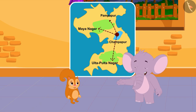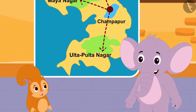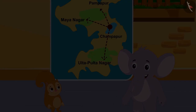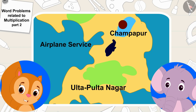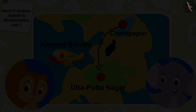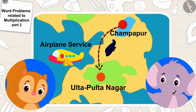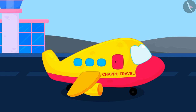We are even running the bus service to more places, Appu said excitedly. Appu, our Chappu Travel Company is doing very well — then why don't we start airplane service from Champapur to Ulta Pulta Nagar now? Chanda told Appu. Yes Chanda, that's a very good suggestion, let us buy an airplane too! Appu replied.